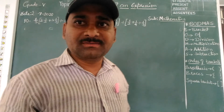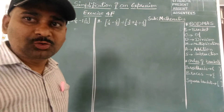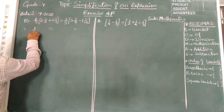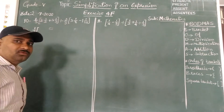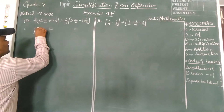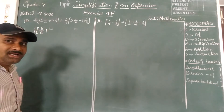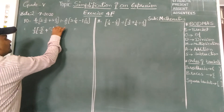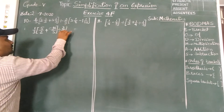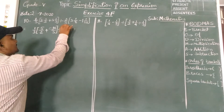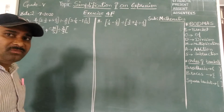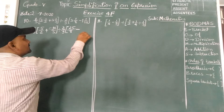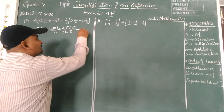The first step is to convert mixed fractions to improper fractions. So: 1 and 1/2 becomes 5/2; 3 and 1/3 becomes 10/3; divided by 2/9 as it is; 3 and 1/8 becomes 25/8; minus 1 and 1/12 becomes 13/12.